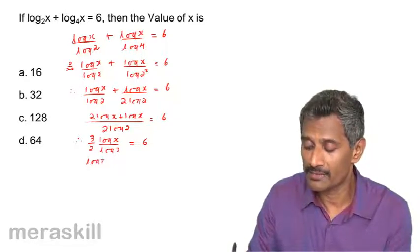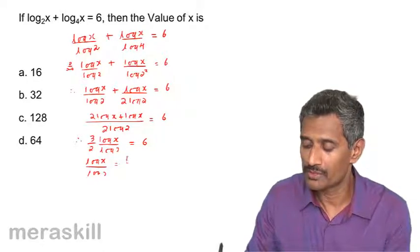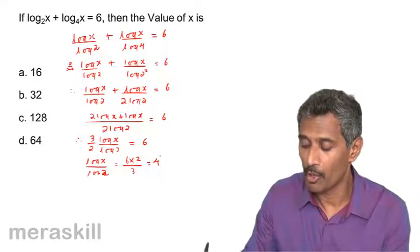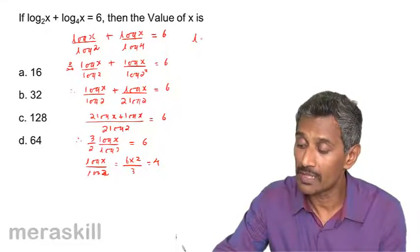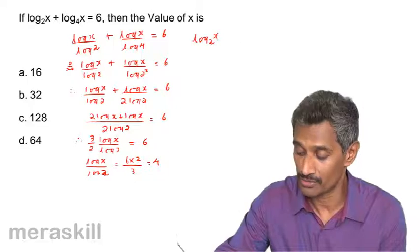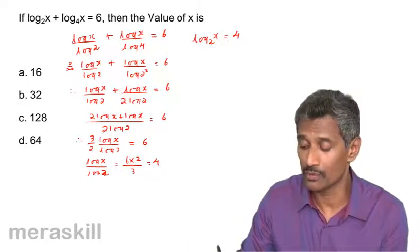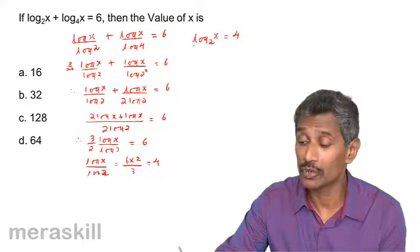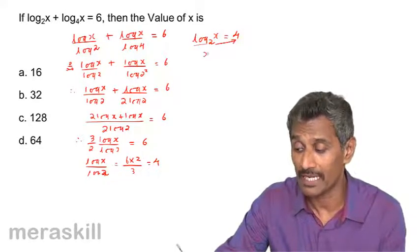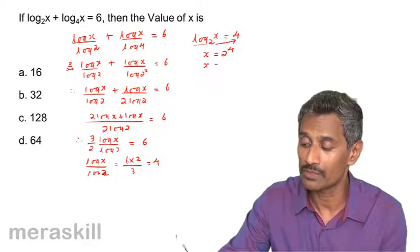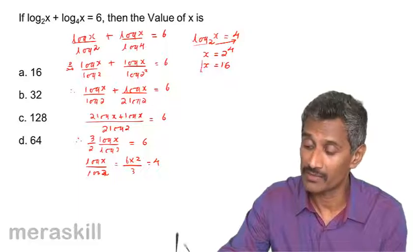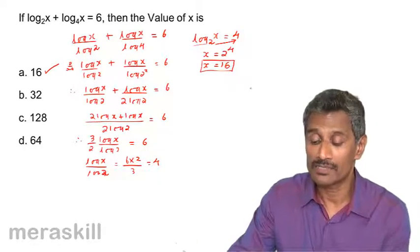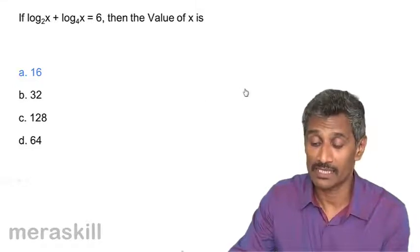This gives 3·log x / (2·log 2) = 6, so log x / log 2 = 4, which by change of base is log_2(x) = 4. Converting to exponential form: x = 2⁴ = 16. Hence x = 16, which satisfies the equation. Checking confirms 16 is the right answer.